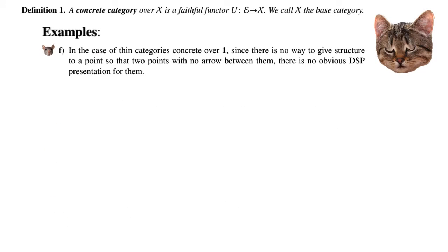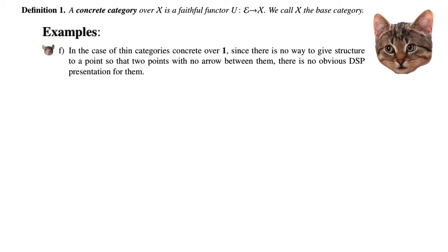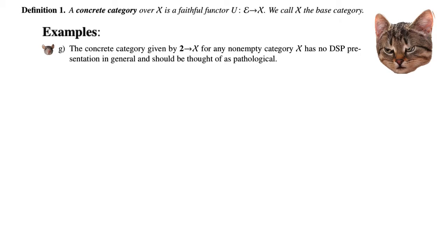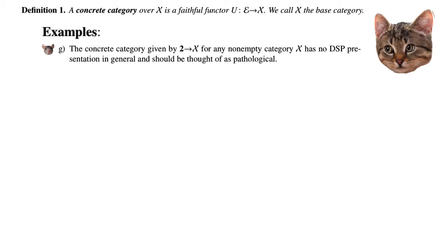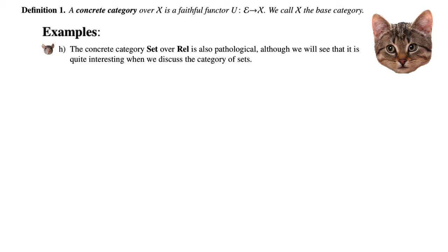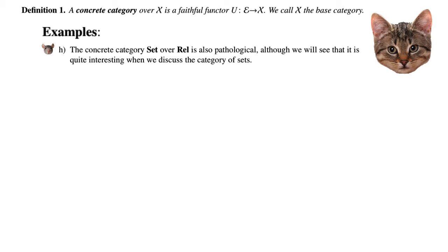In the case of thin categories, there is no obvious way to give structure to a point so that two points with no arrow between them can be encoded by the terminal category 1, since there is always one arrow — the identity — in 1. So there is no obvious DSP presentation for thin categories. The walking arrow category concrete over a non-empty category X also has no DSP presentation — it is like a very free construction, as for every arrow in X there is a functor from the walking arrow category to X. The concrete category Set over Rel is also pathological, and we will return to this when we discuss the category of sets.